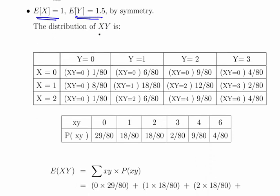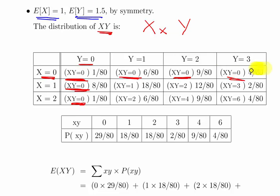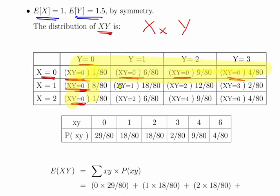We need to calculate the distribution of X times Y — the product of X and Y for each possible pairing. When X equals 0, every product in that column is 0. Similarly, the entire row where Y equals 0 gives products of 0. The remaining non-zero products — 1 over 80, 8 over 80, 1 over 80, 6 over 80, 9 over 80, 4 over 80 — total 29 over 80.